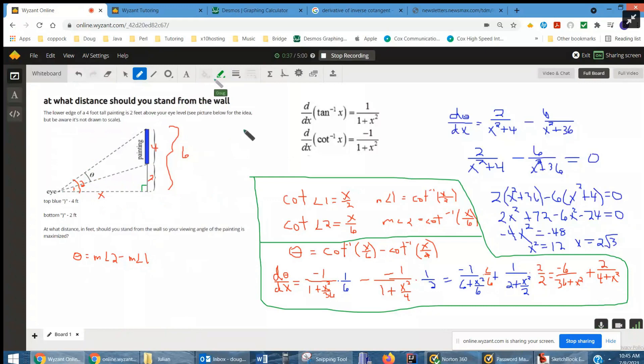Now to get a function of theta in terms of x, we have to use some right triangle trigonometry. And we're going to end up taking the derivative of either the inverse tangent or the inverse cotangent. I recommend using inverse cotangent so that we get x in the numerator of this function instead of in the denominator.